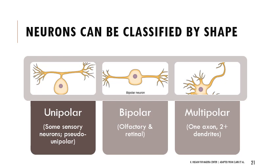Not all neurons look like the multipolar neurons we're used to seeing. Some are unipolar, with only one thing branching out. Some are bipolar, like in our nose and eyes, with two poles. Multipolar means one axon and two or more dendrites - lots of projections coming off the cell body.